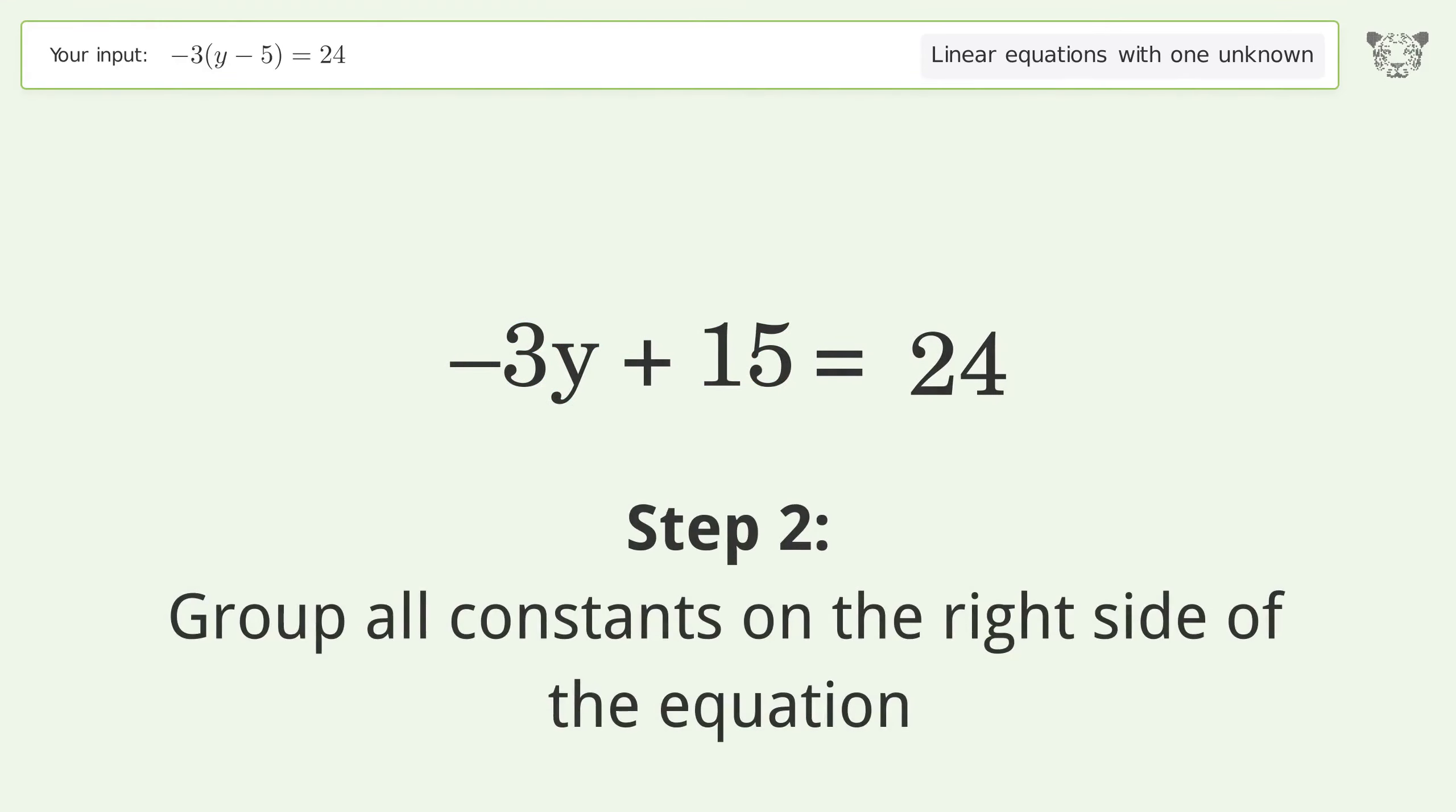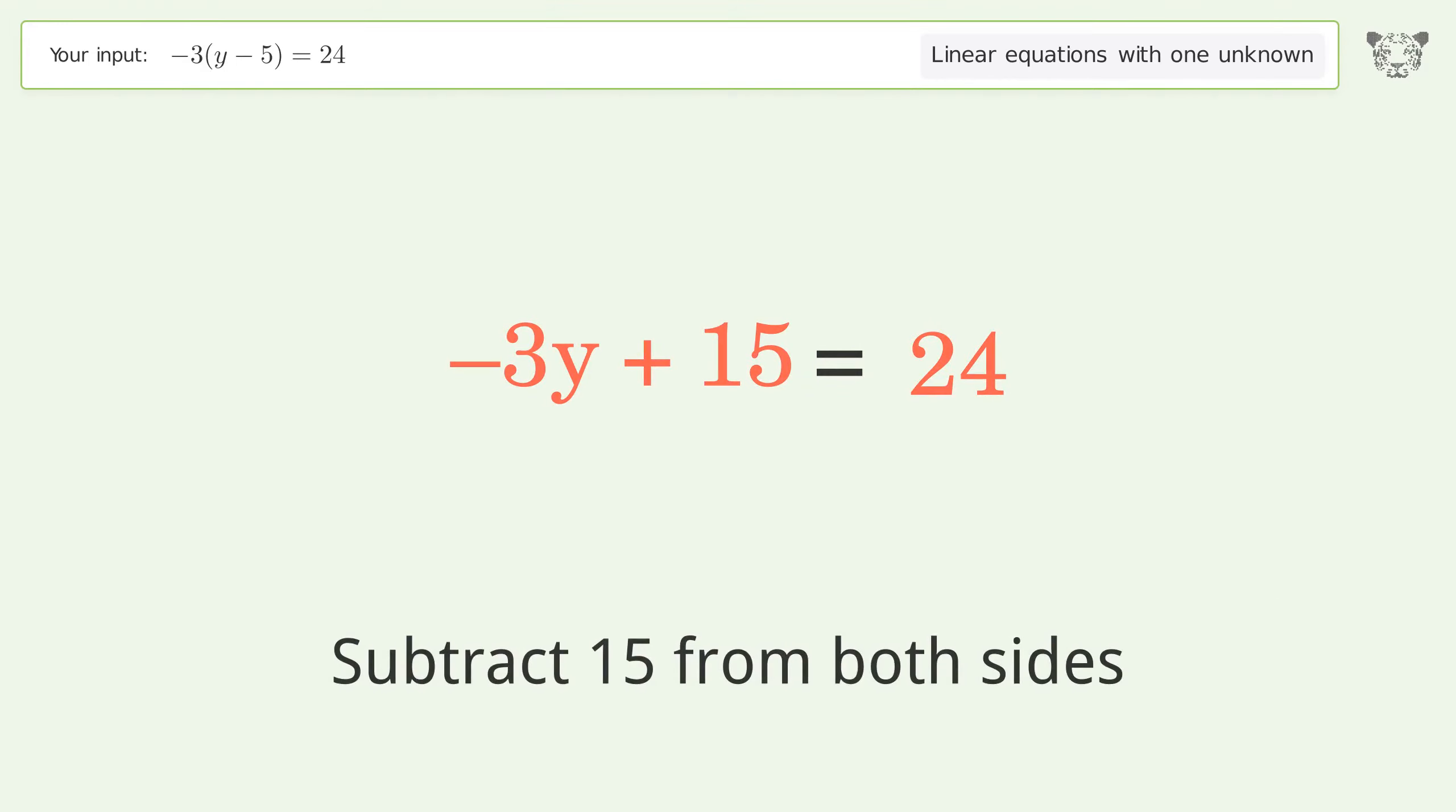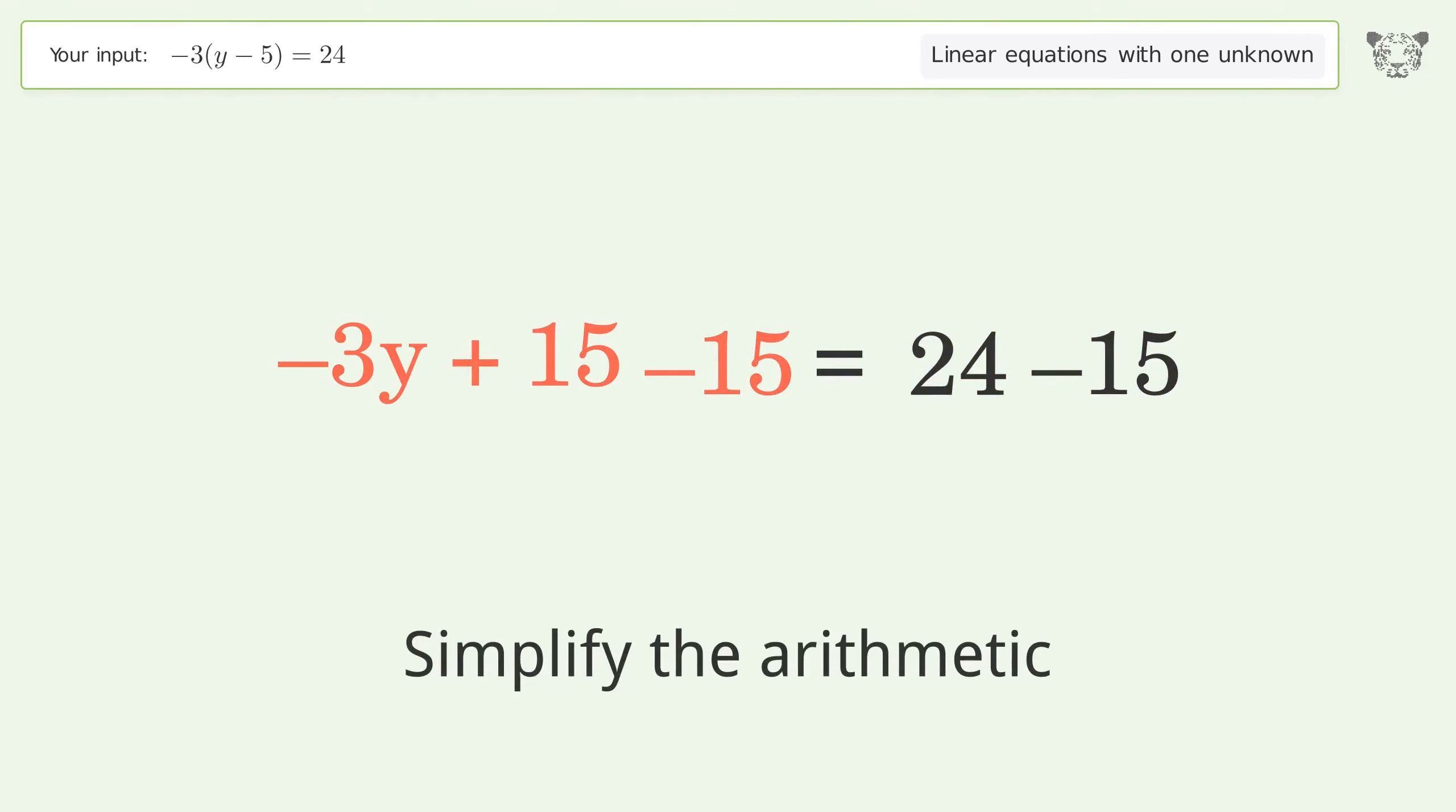Group all constants on the right side of the equation. Subtract 15 from both sides. Simplify the arithmetic.